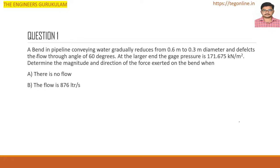The problem: a bend in a pipeline conveying water gradually reduces from 0.6 meter to 0.3 meter diameter and deflects the flow through an angle of 60 degrees. The pipe starts at 0.6 m diameter and ends at 0.3 m diameter, with the pipe bend deflecting flow through 60 degrees.